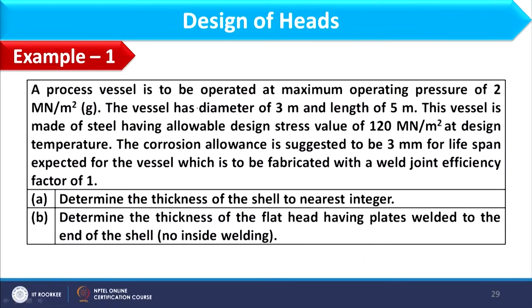Let us start with example 1. A process vessel is to be operated at a maximum operating pressure of 2 MN/m² gauge. The vessel has a diameter of 3 meters and length of 5 meters. It is made of steel with an allowable design stress of 120 MN/m² at design temperature. Corrosion allowance is 3 mm and joint efficiency factor is 1. We need to determine the thickness of shell to the nearest integer.